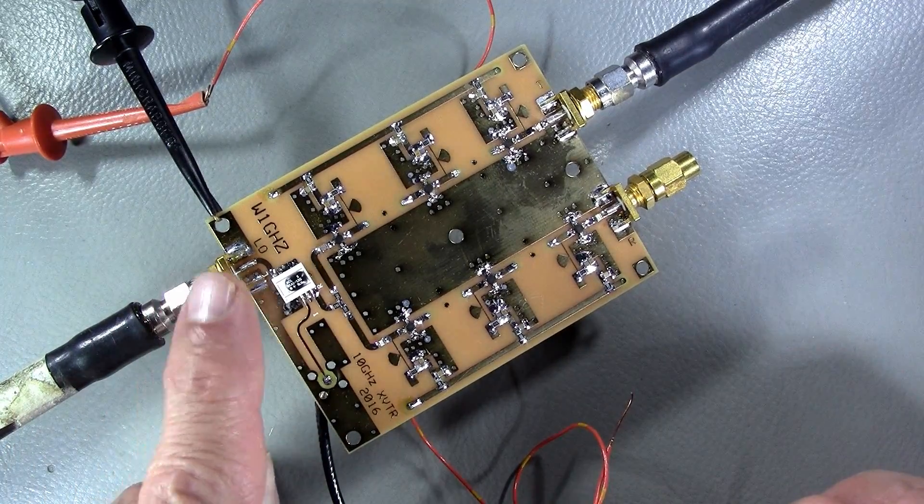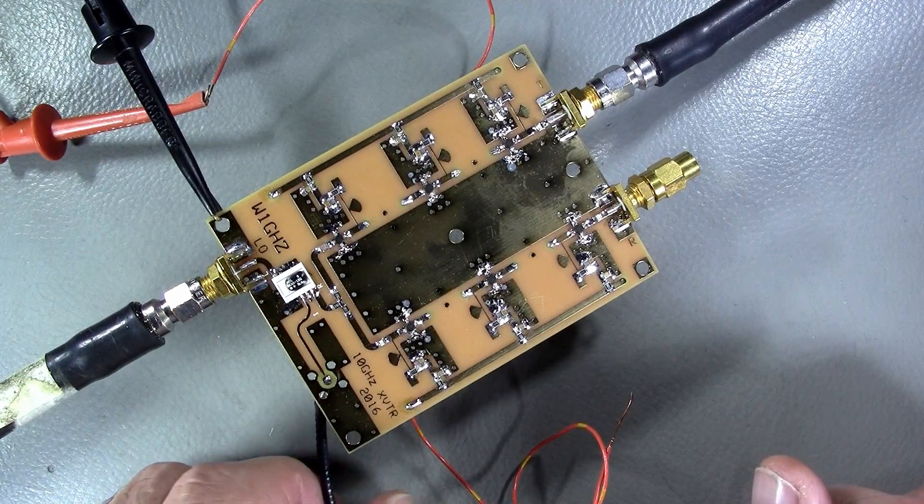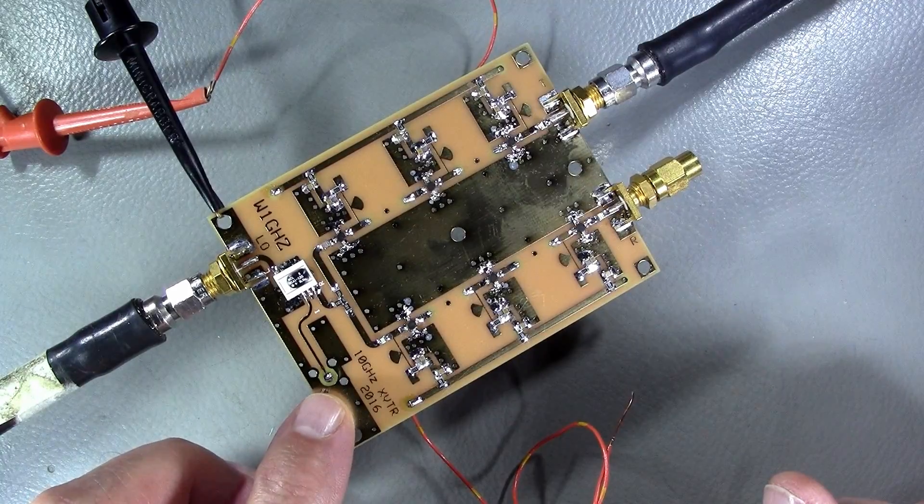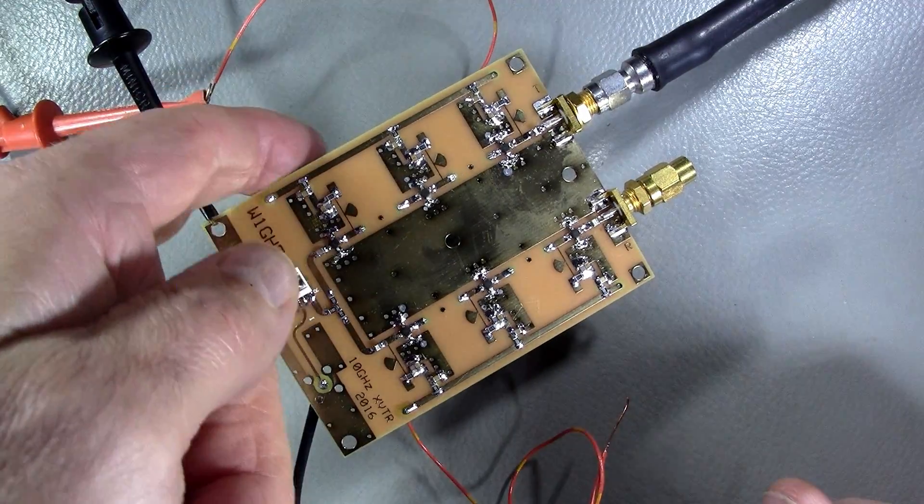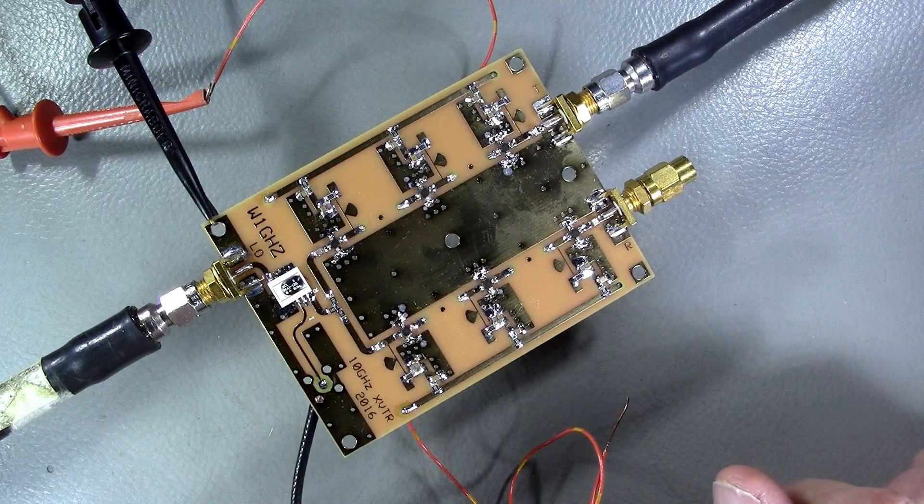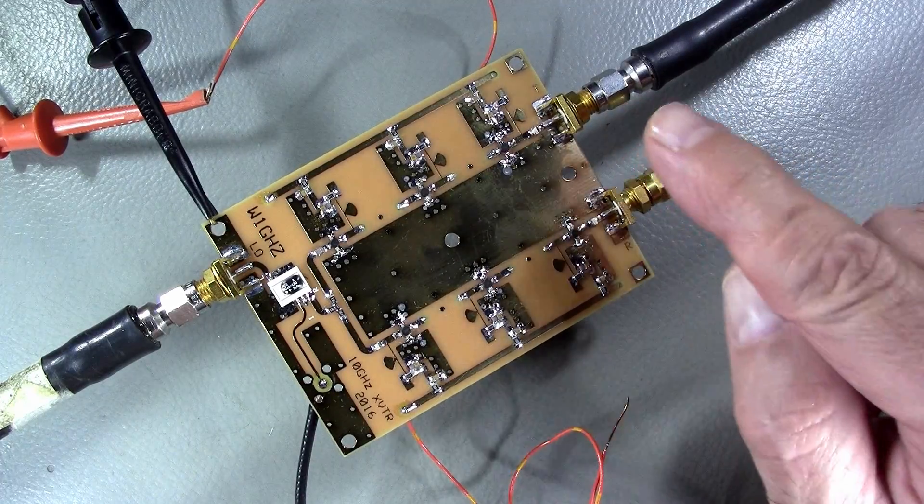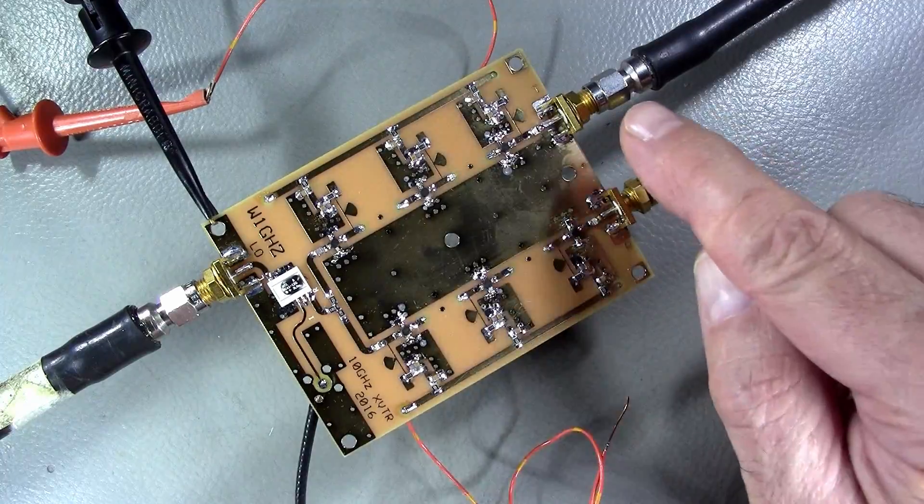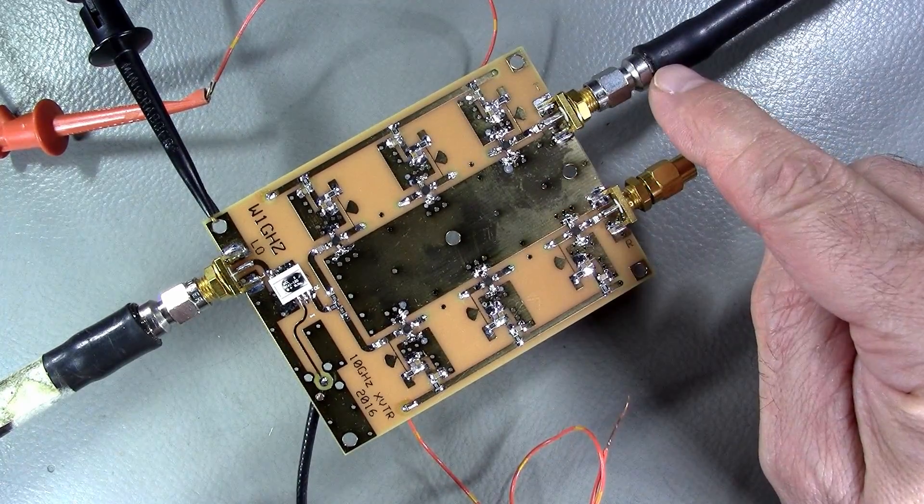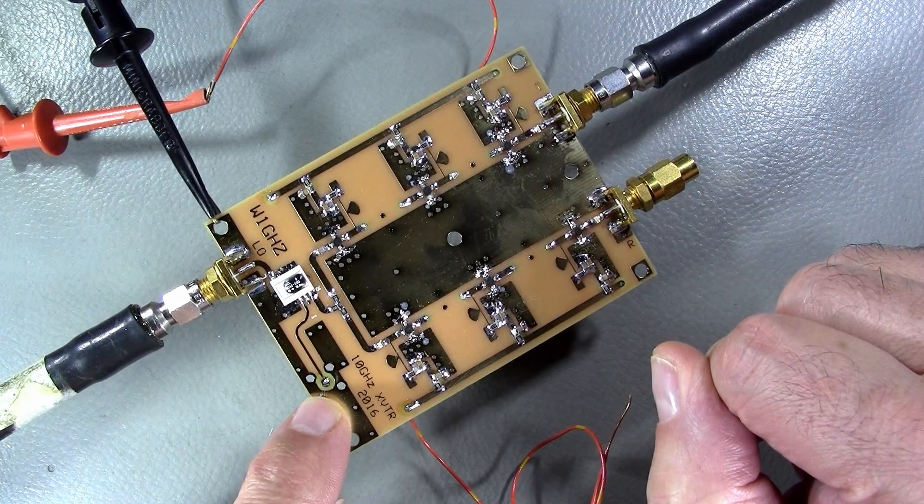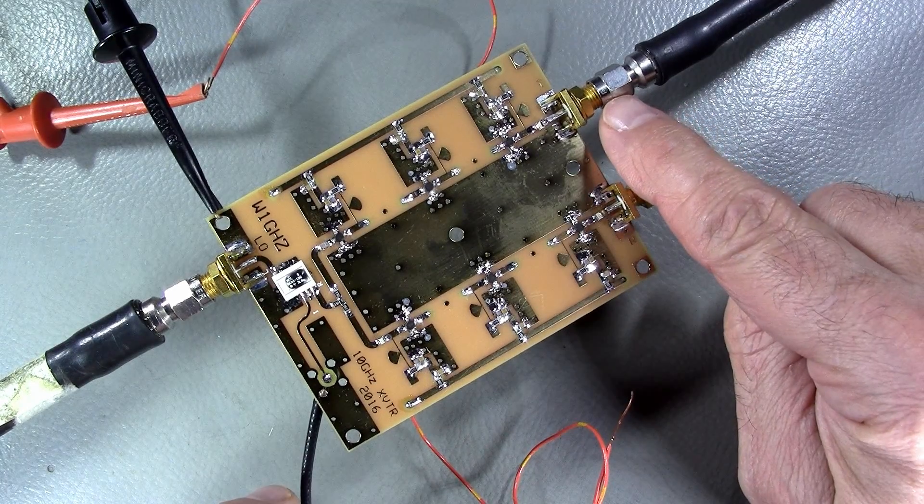I feed an LO signal around +5 dBm to the double balance mixer at 10.204 gigahertz. I also feed 144 megahertz at 0 dBm as recommended by Paul W1GHZ. I tuned up the two pipe cap filters on the spectrum analyzer until I got maximum output at 10.368, our target transmit frequency. The translation works perfectly. I feed 0 dBm at 144 and see 0 dBm output at 10.368 gigahertz. Let's have a look at the spectrum analyzer screen.